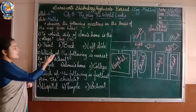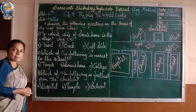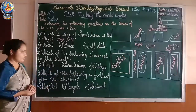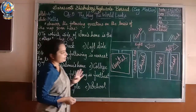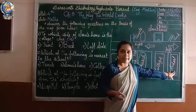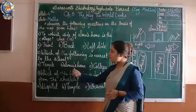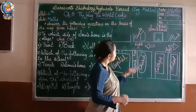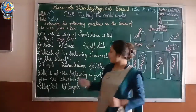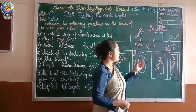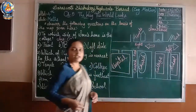Second question: which of the following is nearest to the school? Options are A. Temple, B. Sonu's home, C. College. Temple is far from the school. Sonu's home is also far from the school. College is beside the school. So the answer is option C.